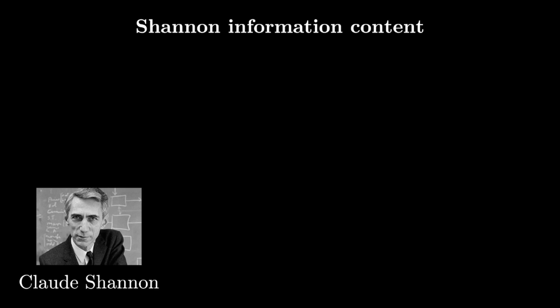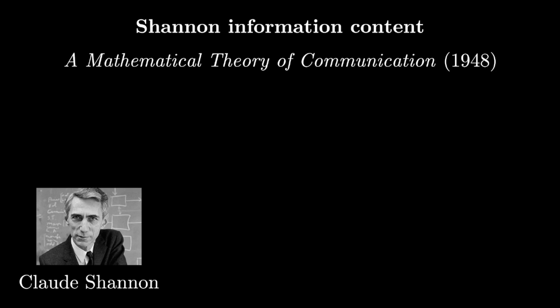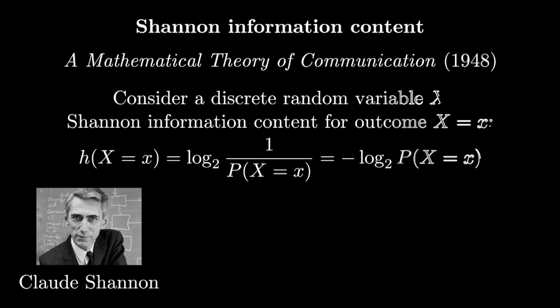The story of modern information theory begins with Claude Shannon in 1948. In his landmark paper, A Mathematical Theory of Communication, Shannon both invented information theory and proceeded to solve some of its most important problems. In particular, he proposed a way to talk about the information content associated with outcomes of random variables.